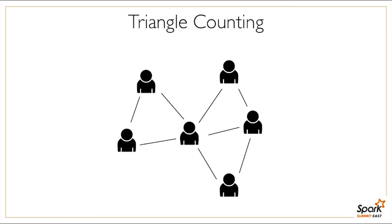Another algorithm is triangle counting, which measures the cohesiveness of communities. Here there are three triangles, and the person in the center is part of all three triangles, which means that his friends tend to know each other—so it's sort of a strong community.